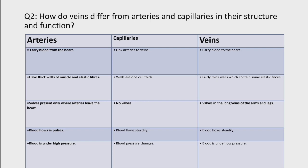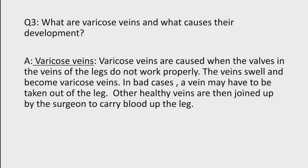Blood vessels جو heart سے blood کو carry کرتی ہیں انہیں arteries کہتے ہیں، اور جو heart میں blood enter کرتی ہیں انہیں veins کہتے ہیں، اور capillaries arteries اور veins کو connect کرتی ہیں۔ Arteries کی thick wall ہوتی ہے اور elastic fibers present ہوتے ہیں۔ Capillaries میں کوئی valve present نہیں ہوتا۔ Arm اور legs کی veins میں valve present ہوتا ہے to prevent the back flow of blood۔ Arteries میں blood high pressure کے ساتھ move کرتا ہے، جبکہ capillaries اور veins میں blood low pressure پر move کرتا ہے۔